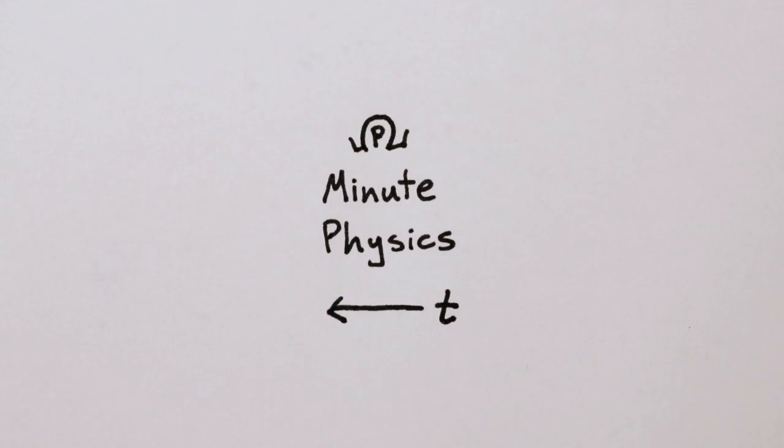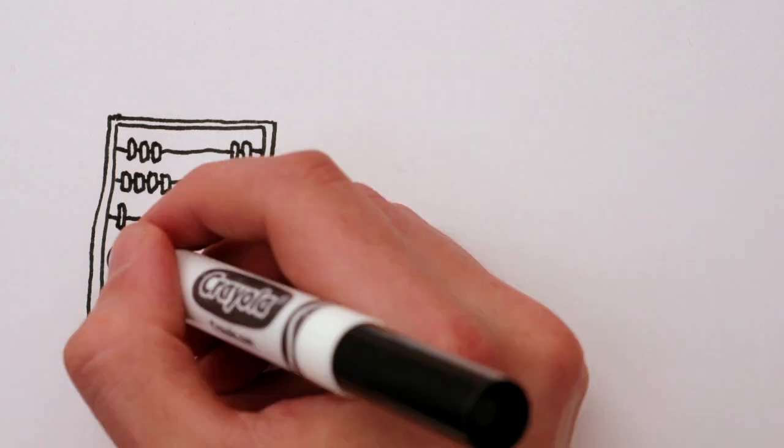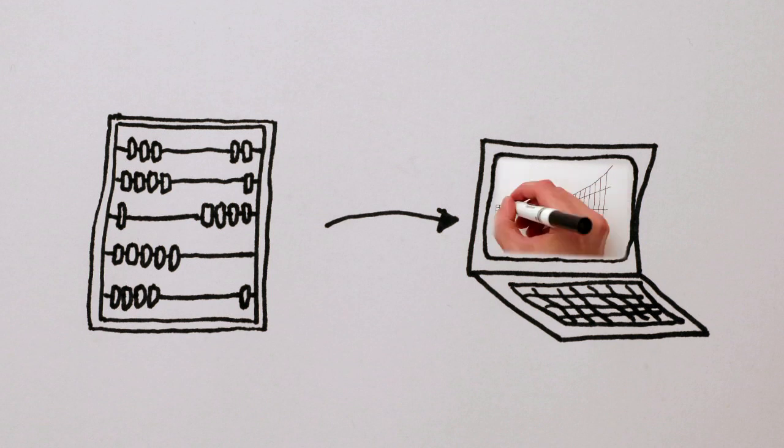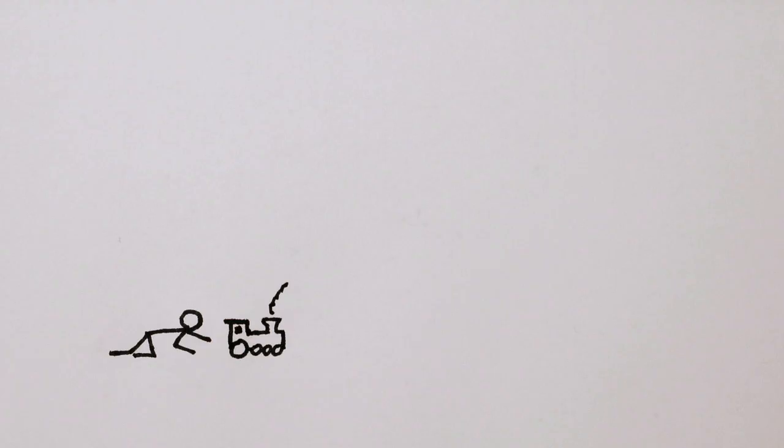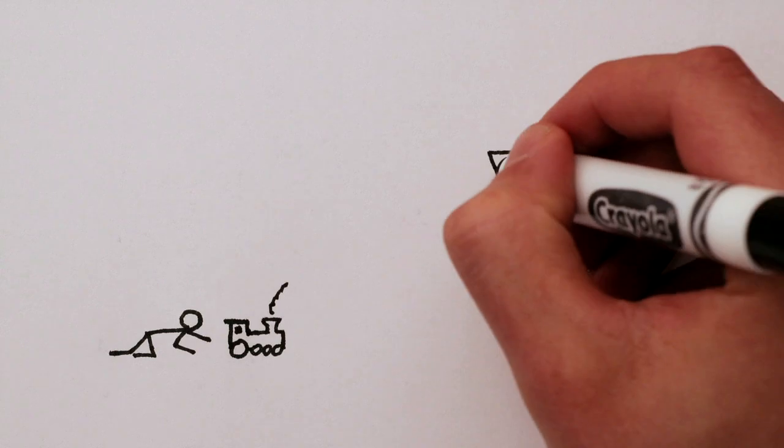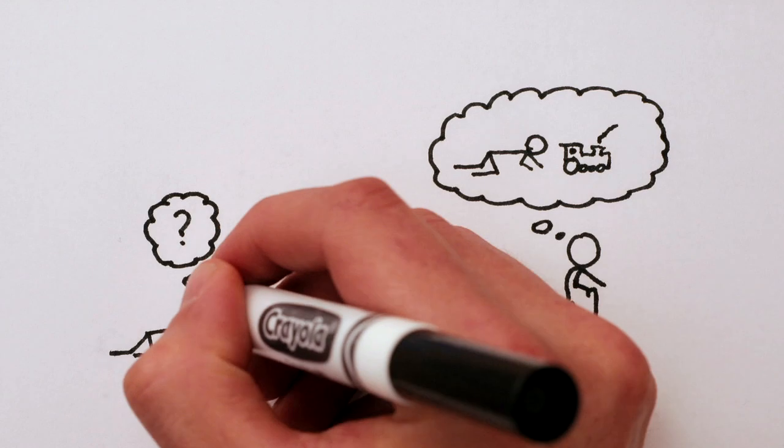It's perfectly obvious that time has a direction. All we mean by that is that the past is different from the future in lots of different ways. We were younger in the past. We will be older in the future. We remember the past. We don't remember the future.